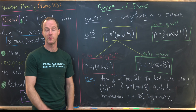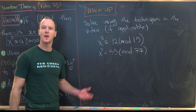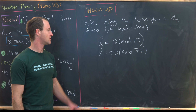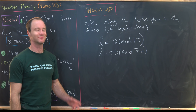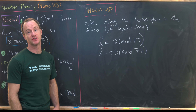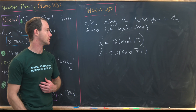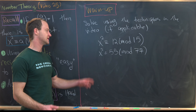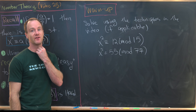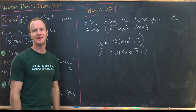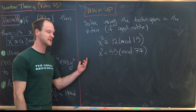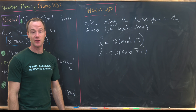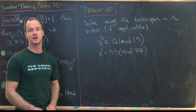Let's finish with some warm-up problems. Solve the following congruences using the propositions from this video — not by guess and check. First: x² ≡ 12 mod 15. Second: x² ≡ 55 mod 77. If you need extra practice, try writing your own congruences and solving them, and feel free to leave interesting ones in the comments.